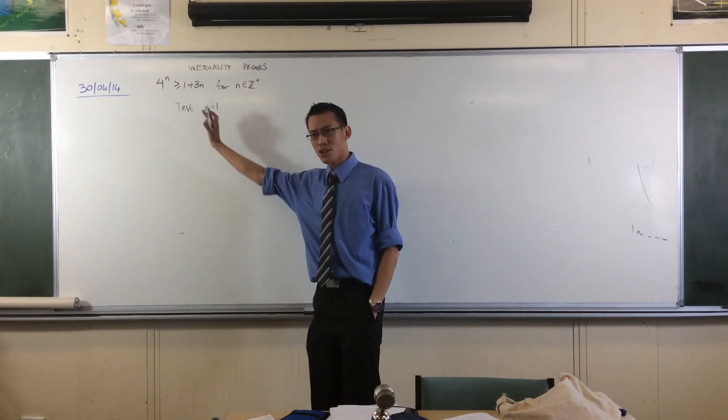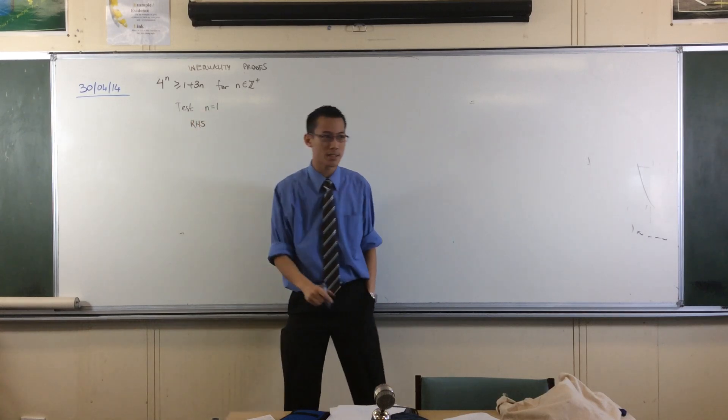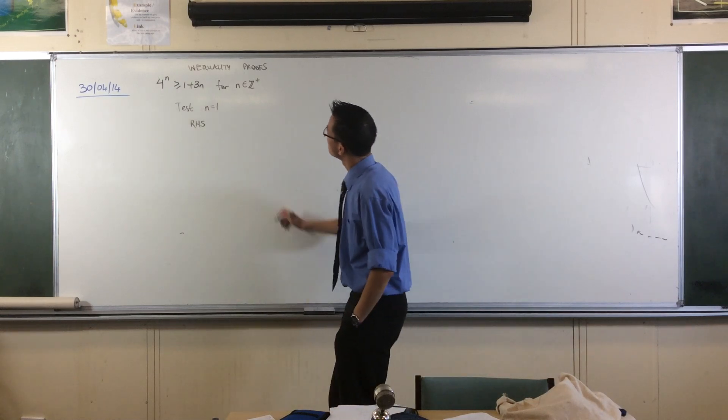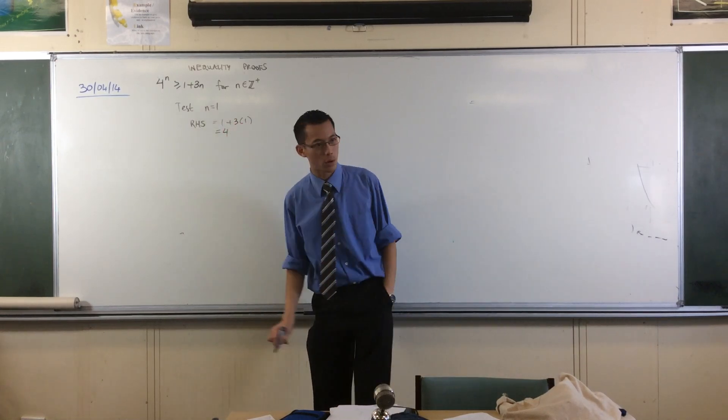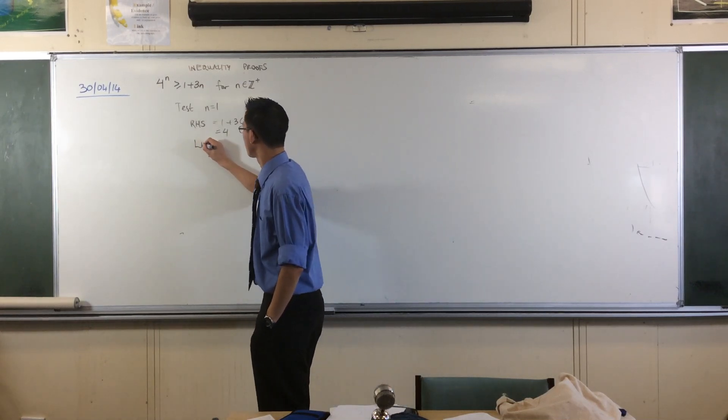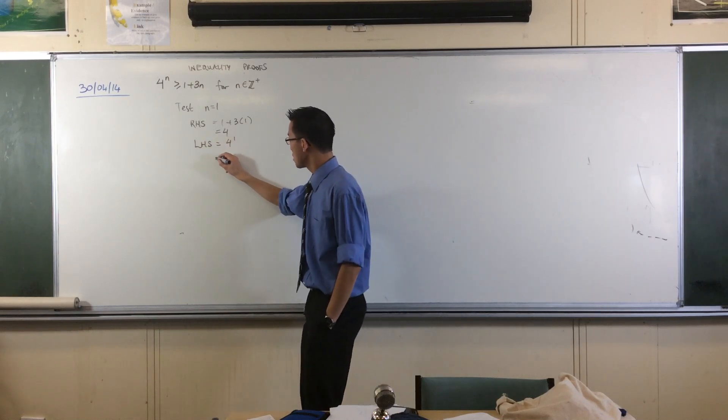What's it look like? Even though you normally start with the left-hand side here, for reasons that will become clear in about two minutes, I'm going to start with the right-hand side. What's it equal to? It's 1 plus 3, which is 4. What is the left-hand side equal to? The left-hand side is 4 to the power of 1, which is 4.